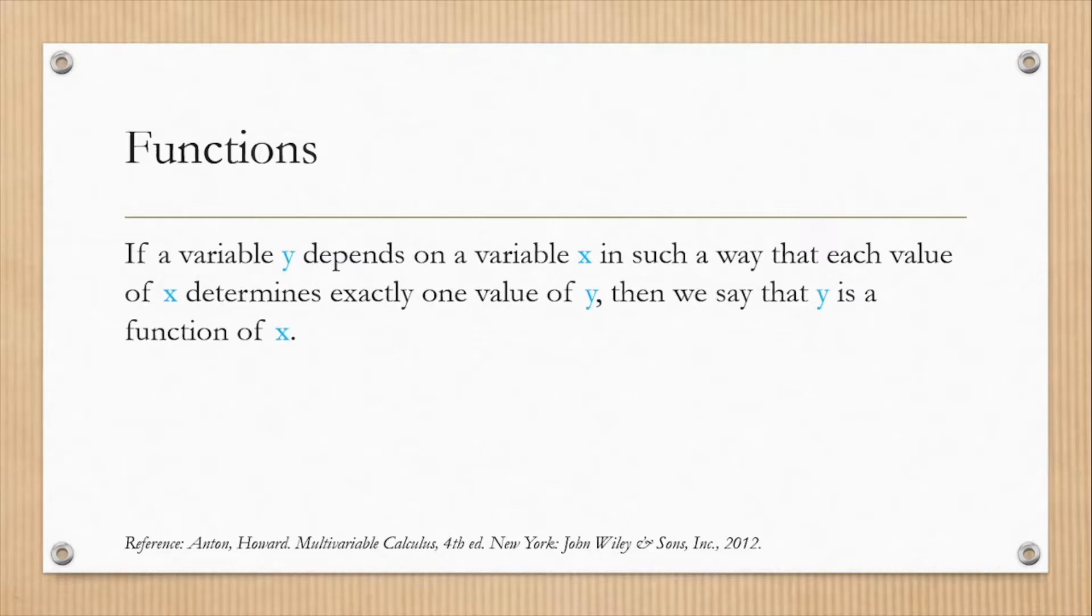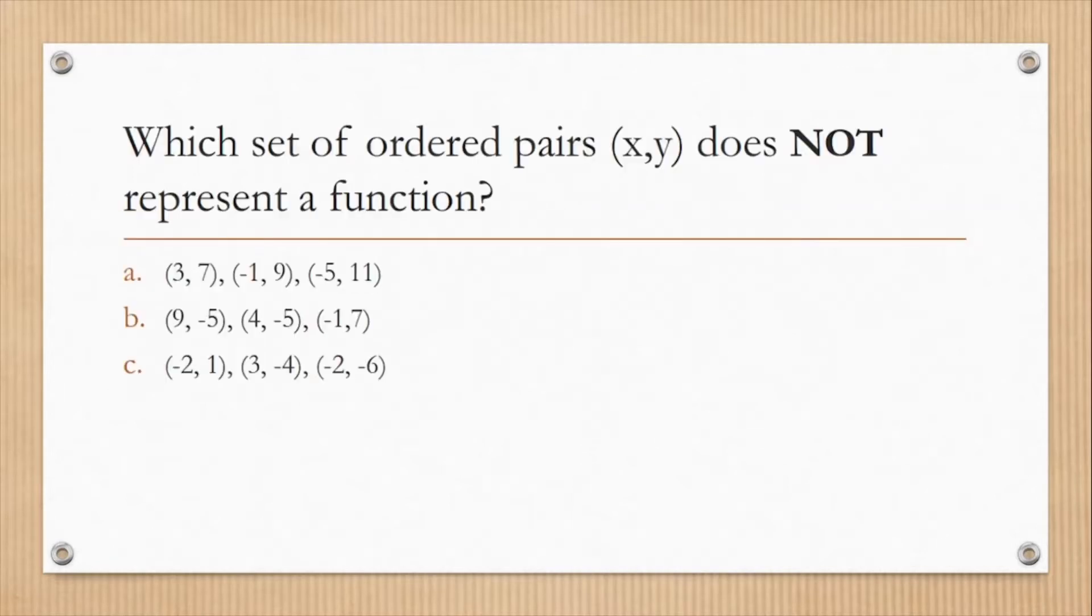Now, how or when do we consider that a given quantity is a function of another? If a variable y depends on a variable x in such a way that each value of x determines exactly one value of y, then we can say that y is a function of x. For example, if we have a given value of x and with that there is only one corresponding value of y, then y is a function of x.